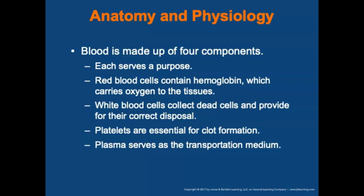Red blood cells, or erythrocytes, contain hemoglobin, which carries oxygen to the tissues. Red blood cells make up 42% to 47% of blood volume. White blood cells, or leukocytes, make up 0.1% to 0.2% of blood cell volume; they collect dead cells and respond to infection. Platelets make up 4% to 7% of blood cell volume and are essential for clot formation — they respond to skin and blood vessel damage to stop bleeding. Plasma is the transportation medium for blood components, proteins, and minerals.